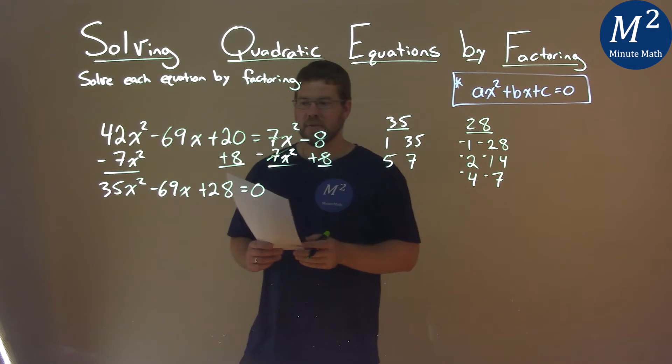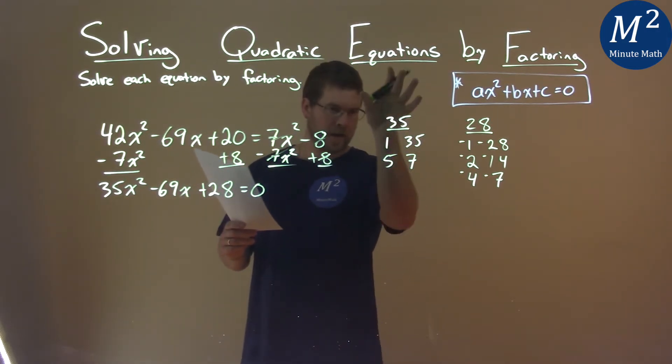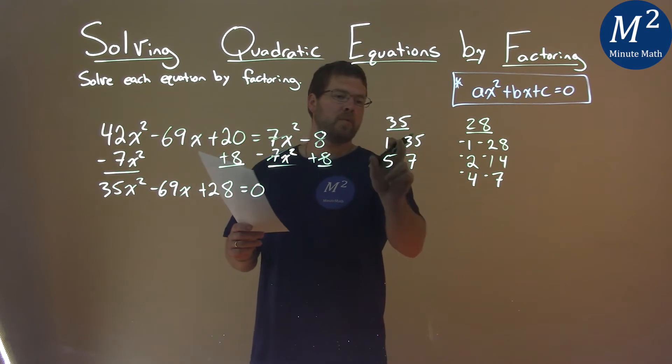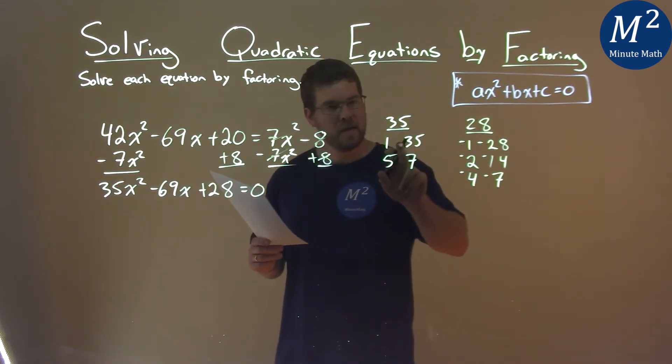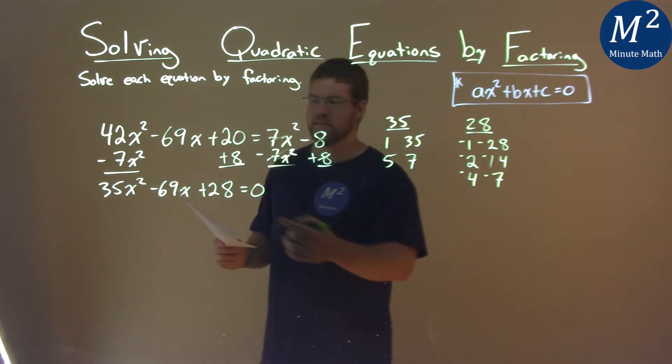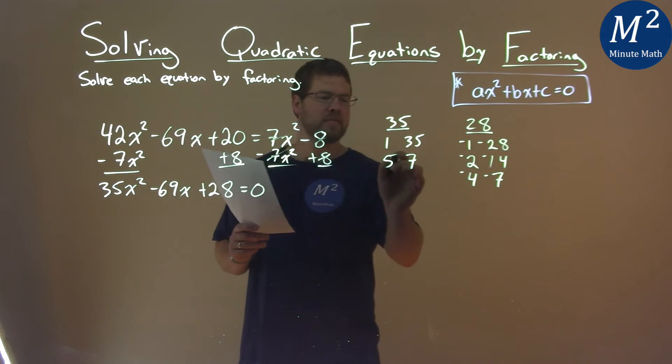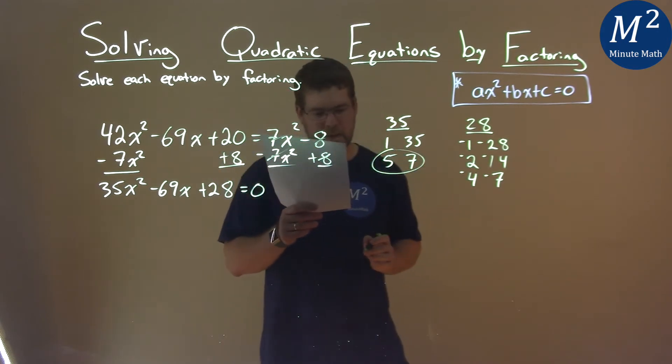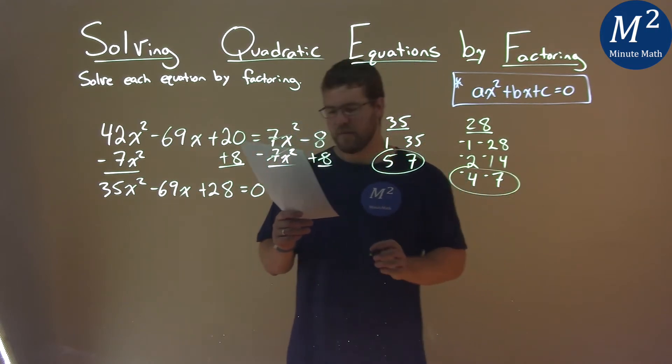So now we ask ourselves, picking from a pair in the a column, what pair, one of them multiplied by one from the c plus one from the a times the other one from the c gets us a negative 69. And I'm kind of leaning towards the 5 and 7 here. And then, what is it? The 4 and the 7. The negative 4 and negative 7.